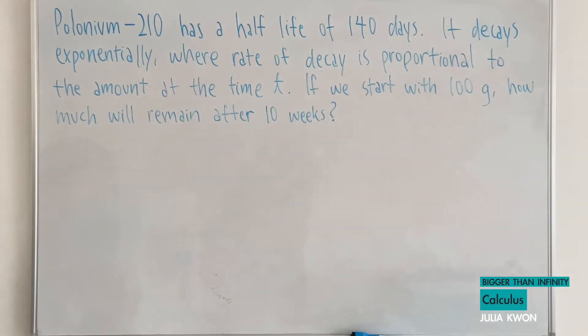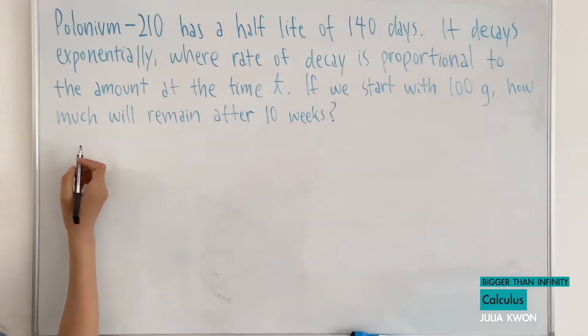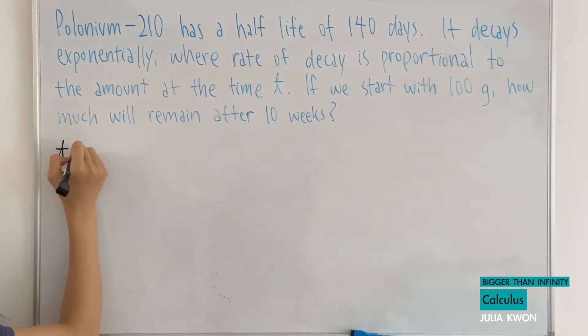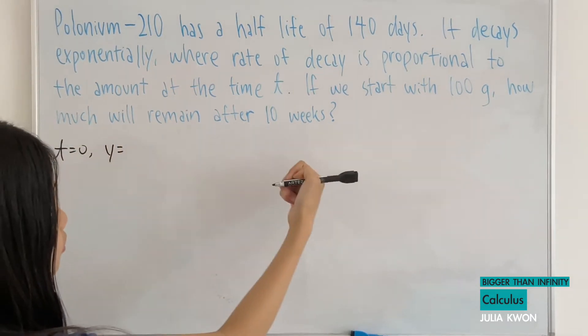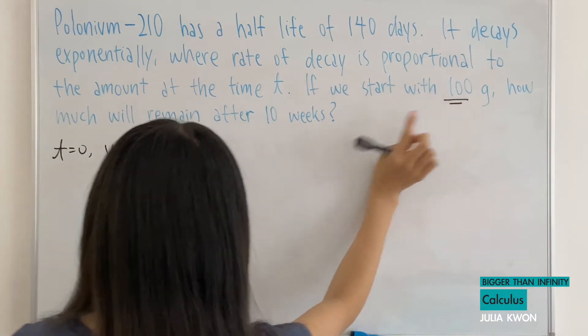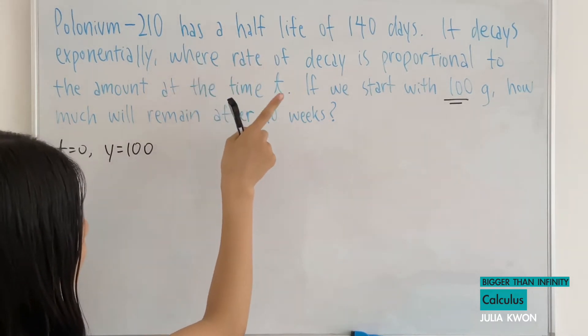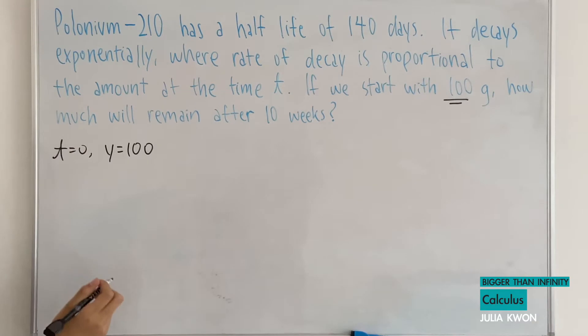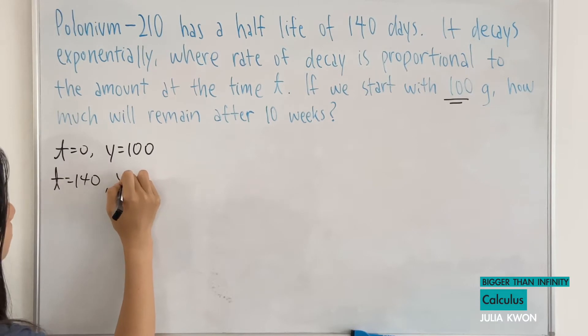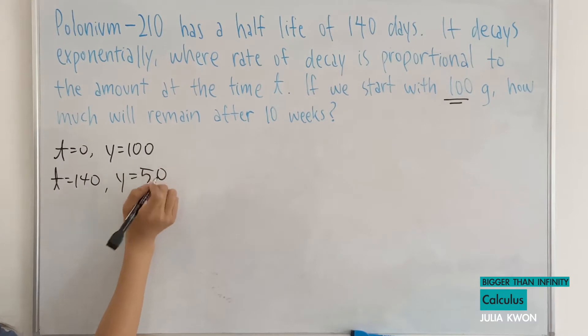First, we're going to start off by writing everything that this problem gives us. We know that when t is equal to 0, it is 100 grams. It tells it right here, we start with 100 grams, and it has a half-life of 140 days. And that tells us that when t is equal to 140, y is equal to half of what we started, which would be 50.